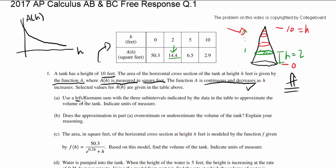Part A: Use a left Riemann sum, not midpoint, not right. We want to use left with the three subintervals indicated by the data in the table to approximate the volume of the tank. So how can we approximate the volume?